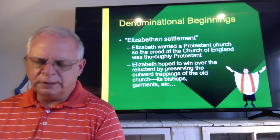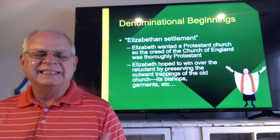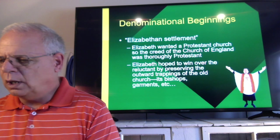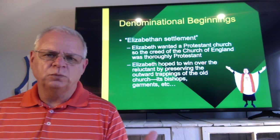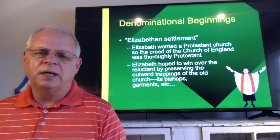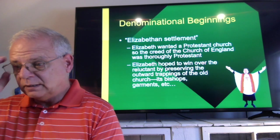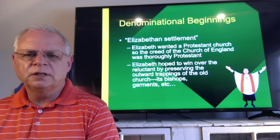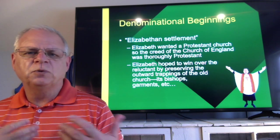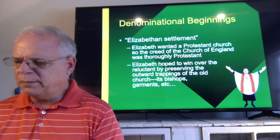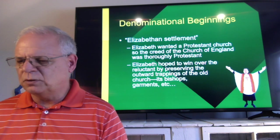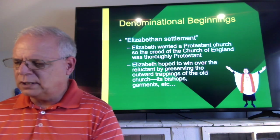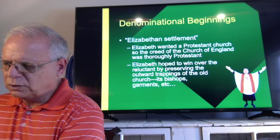The Elizabethan Settlement: Elizabeth is in that time period of Protestants and Catholics competing over who will control the church and, in turn, the government. She's trying to get everybody appeased. In the Elizabethan Settlement, she wants a Protestant church — the Church of England was thoroughly Protestant — but she wants to pull the reluctant in by preserving the outward trappings of the old church: bishops, familiar terminology, familiar garments, all of these things to keep people satisfied.